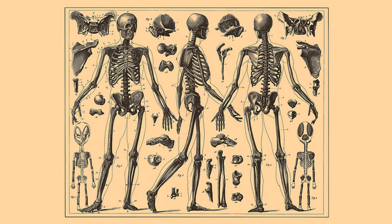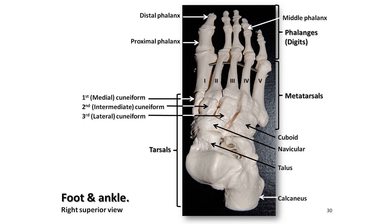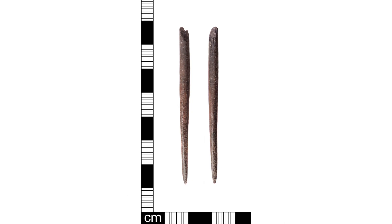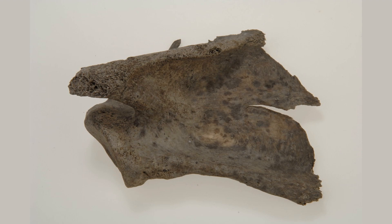In this video, we have discussed the skeletal system and its importance in the human body. We have learned that the skeletal system consists of 206 bones, which are divided into two main categories: axial and appendicular. We have also discussed the five types of bones — long bones, short bones, flat bones, irregular bones and sesamoid bones. We have learned that bones perform several essential functions, including providing support, protecting vital organs, producing blood cells, storing minerals and allowing movement. We have also discussed how bones grow and develop over time, starting from birth and continuing until adulthood.